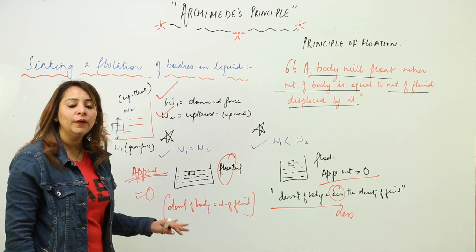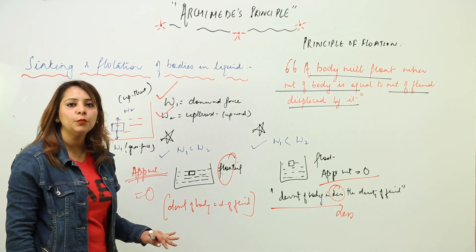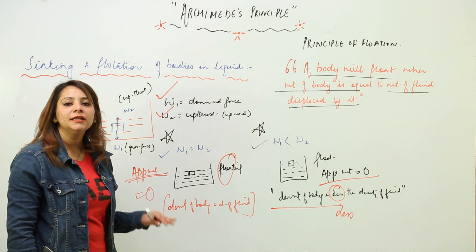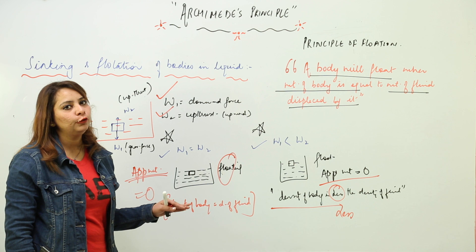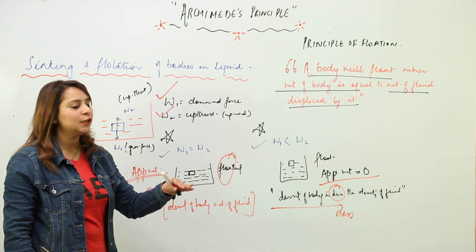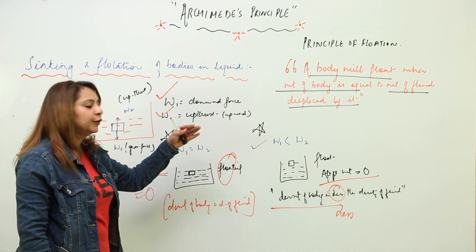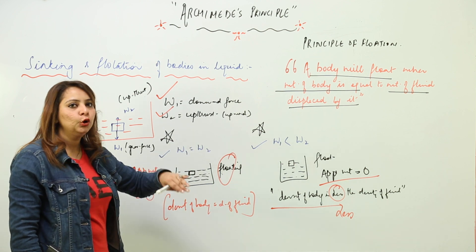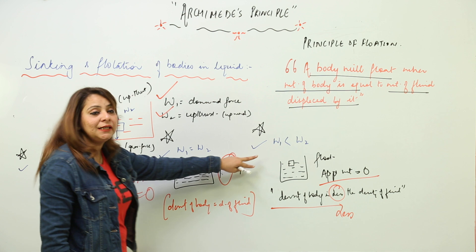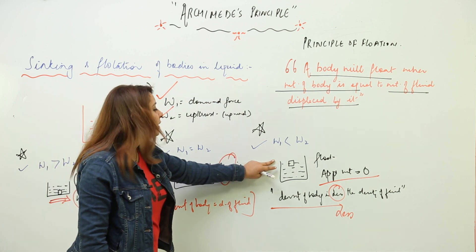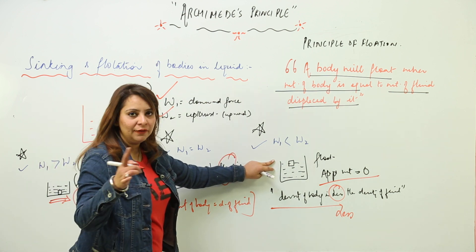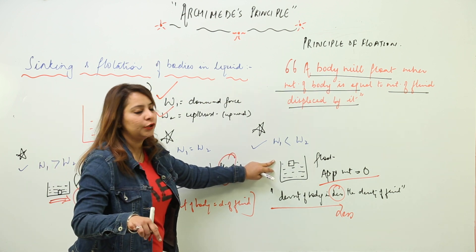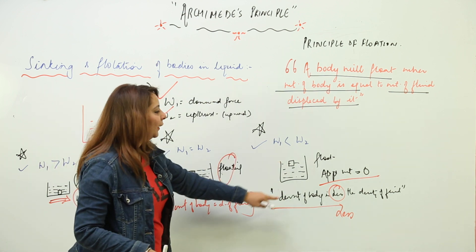So these are the three conditions: the body sinks, the body floats just below the surface, and the body floats with some volume above the surface and some volume in the water. As you can see in the third condition, some volume is above the surface and some is submerged.